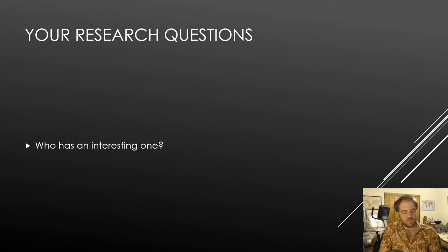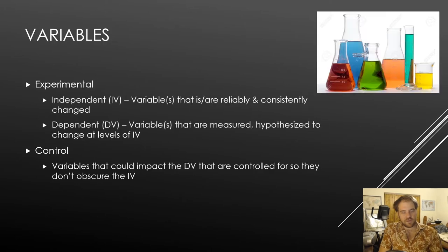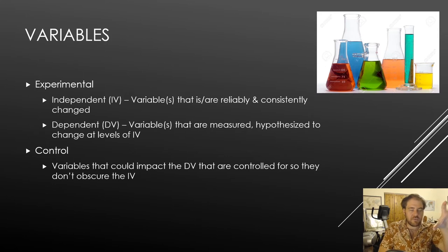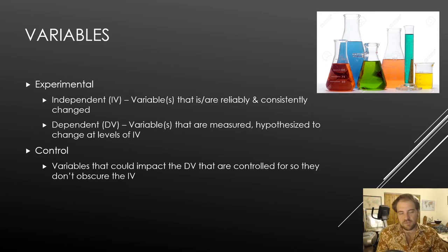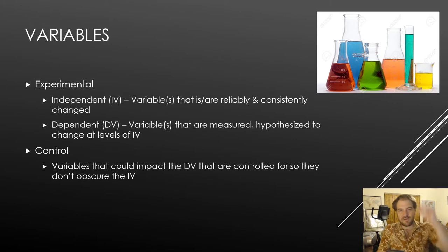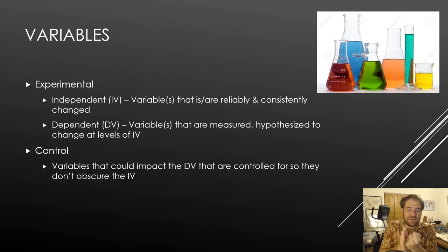We're going to move on to talking about variables. In research there are different types of variables — we can have experimental variables and control variables. Your experimental variables are the things that you're actually changing or measuring, something that's actually involved in the experiment. A control variable is something that you're controlling or holding constant.